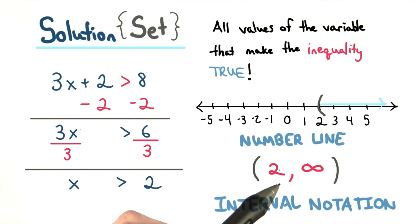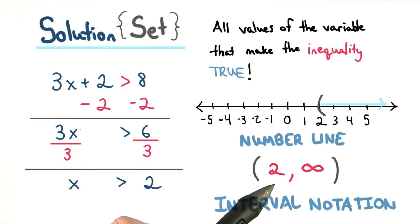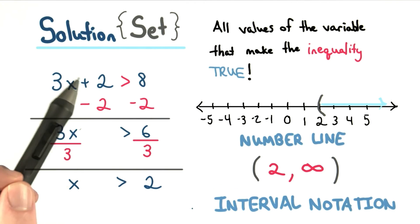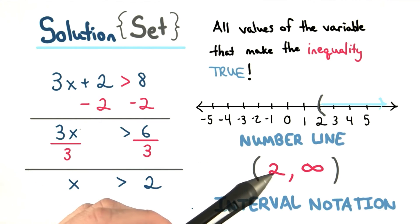2 is considered to be the lower bound of our solution set. We use an open parentheses for 2 so that way we don't include it. We can remember because if we plug in 2 here, we'll get 8 greater than 8, which isn't true. So we don't include 2 in the solution.